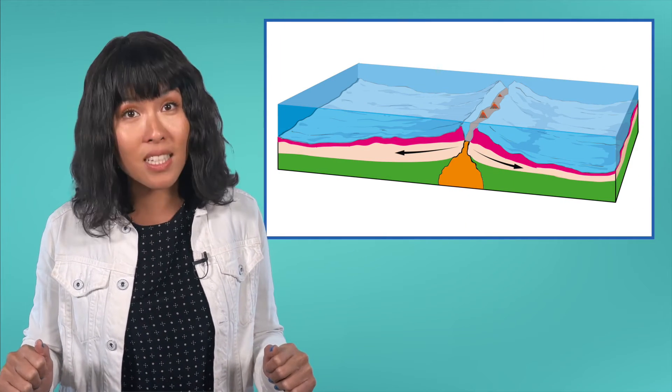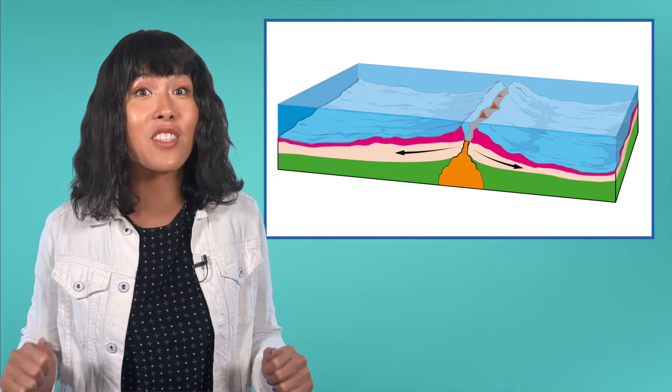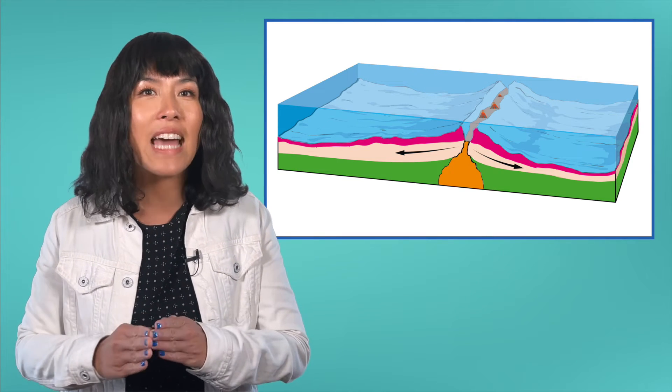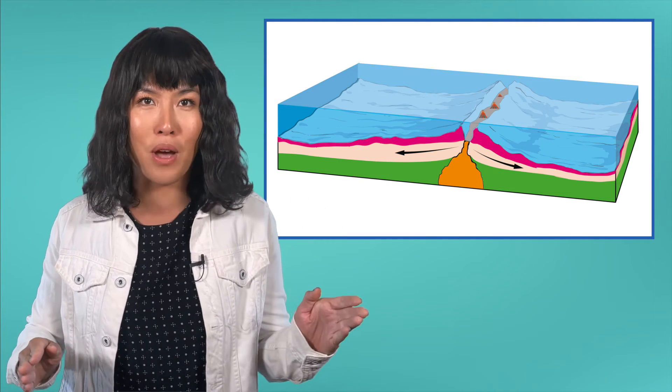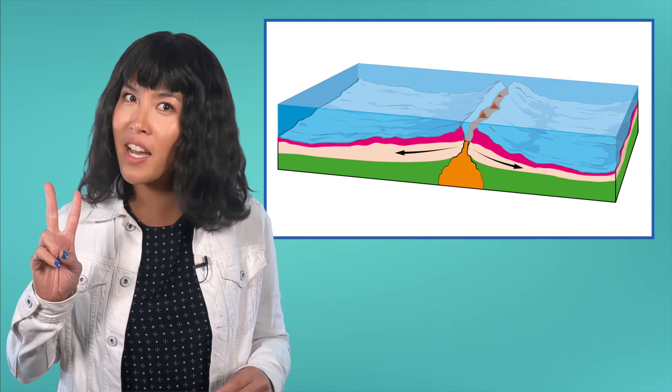To answer these questions, well, we'd need to leave the subduction zone at this convergent boundary and head to a divergent boundary between two oceanic plates instead.